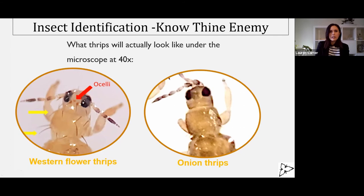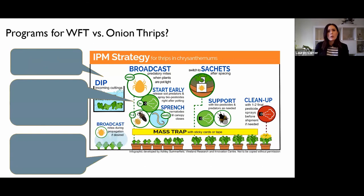So why does this matter? It's because we know that biocontrol programs developed for Western flower thrips are not working for onion thrips. One of the reasons Graham and Mike first noticed this phenomenon is not just that heavy pattern of feeding and the lack of thrips on the card, but also it was people with really solid biocontrol programs that were failing and having this thrips overload they couldn't explain.